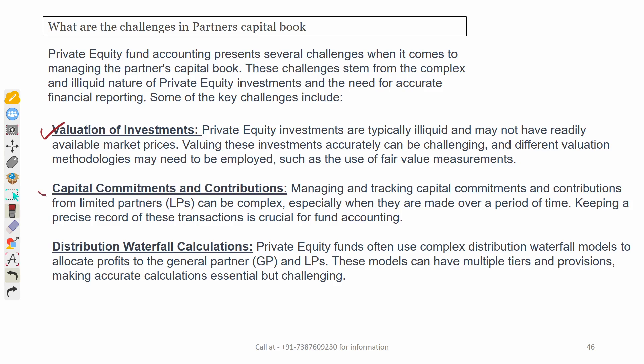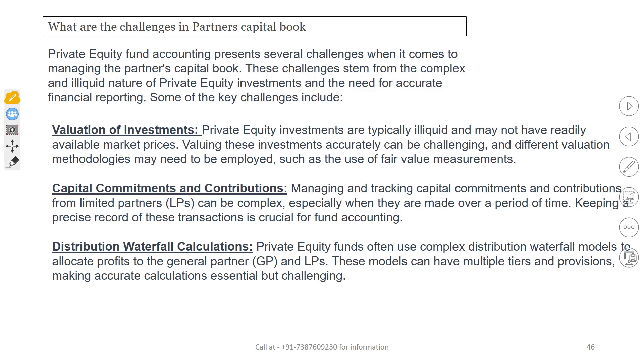Another challenge is capital commitment and contributions tracking — tracking capital commitments and distributions on a regular basis. If you record any contributions or distributions incorrectly, that creates potential risk. Another challenge is the distribution waterfall calculation — calculating distributions is a complex process and can sometimes be very difficult to follow. However, in upcoming times, capital calls, distributions, and related processes may become easier through automation.